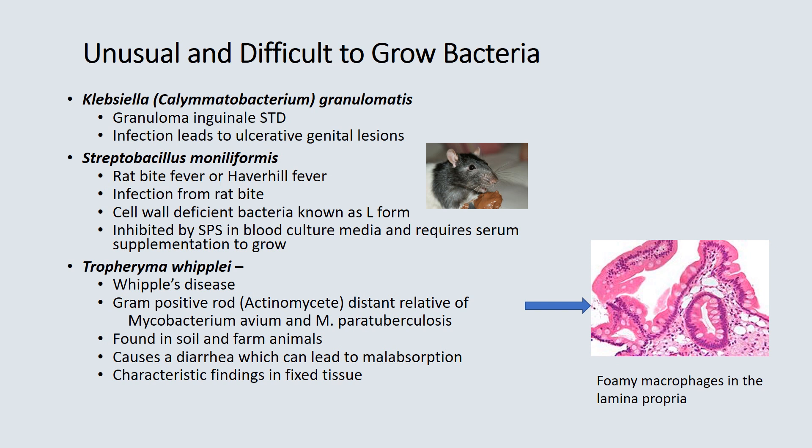Tropheryma whipplei is the cause of Whipple's disease — a gram-positive rod or actinomycete, a very distant relative of two mycobacterium species. It is found in soil and farm animals and causes diarrhea that can lead to malabsorption. It has characteristic findings in fixed tissue of foamy macrophages in the lamina propria.